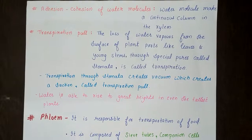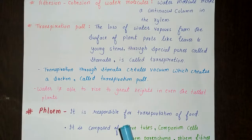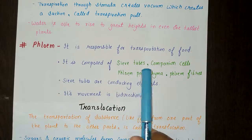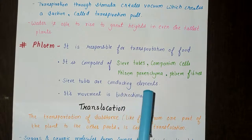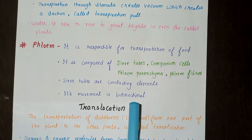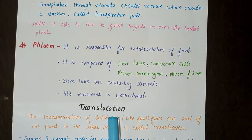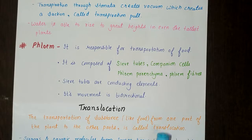The second vascular tissue is phloem. It is responsible for transportation of food — whereas xylem is responsible for transportation of water, phloem is responsible for transportation of food. It is composed of sieve tubes, companion cells, phloem parenchyma, and phloem fibers. Sieve tubes are the conducting elements. The movement inside phloem is bidirectional, unlike xylem which is unidirectional. The process inside phloem is called translocation — the transportation of substances like food from one part of the plant to the other parts.